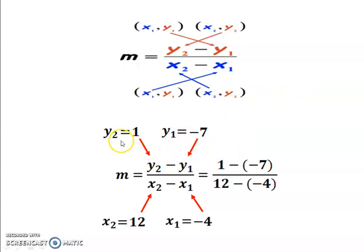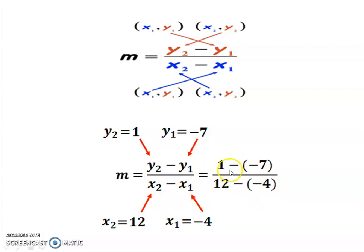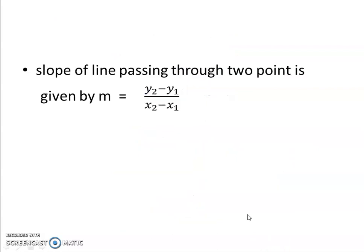Let us check with an example. If y2 equal to 1, y1 equal to minus 7, x2 equal to 12, and x1 equal to minus 4, we put the values into the slope formula: m equal to y2 minus y1 upon x2 minus x1. So, 1 minus (minus 7) upon 12 minus (minus 4), which gives 1 plus 7 equals 8 in the numerator, and 12 plus 4 equals 16 in the denominator. The final answer is 8 upon 16, which is 1 upon 2.